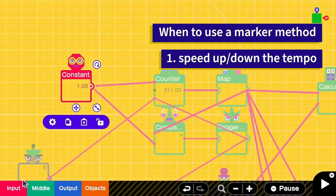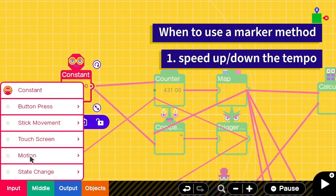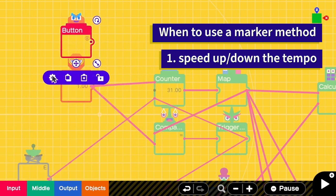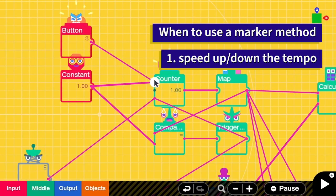We can use this when we want to be able to change the tempo. For example, I want to speed up when B is pressed. I can add button press B. The settings is while pressed. Then when B is pressed, I will count up faster. Let's try it. See? Yeah, so it has more flexibility.